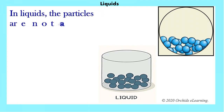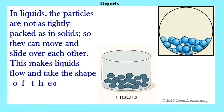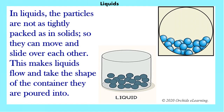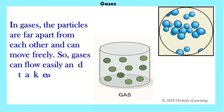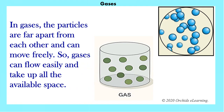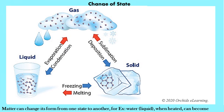In liquids, the particles are not as tightly packed as in solids, so they can move and slide over each other. This makes liquids flow and take the shape of the container they are poured into. In gases, the particles are far apart from each other and can move freely, so gases can flow easily and take up all the available space.